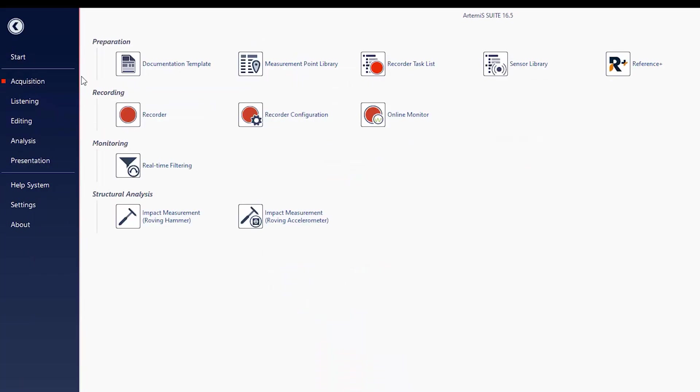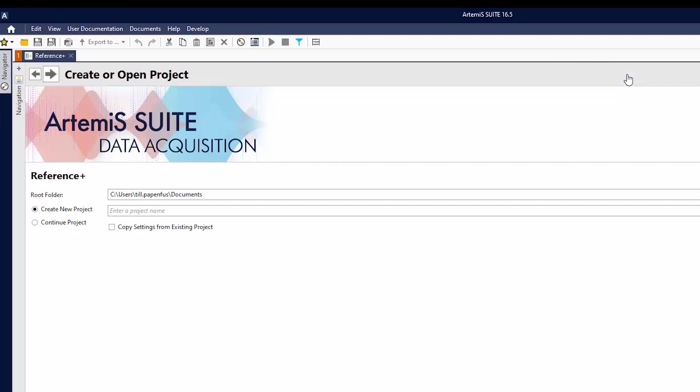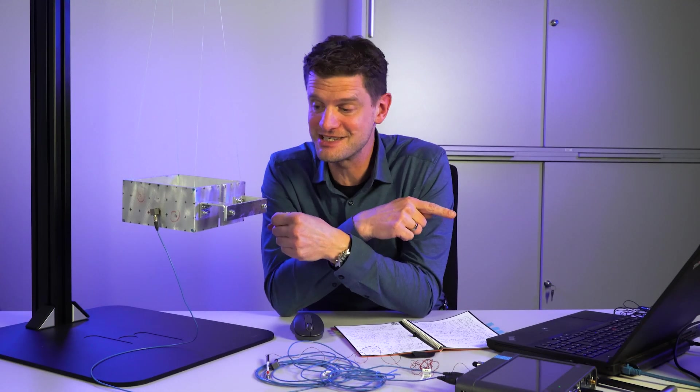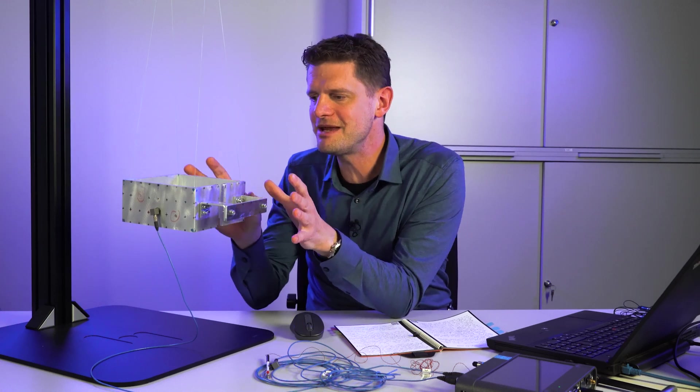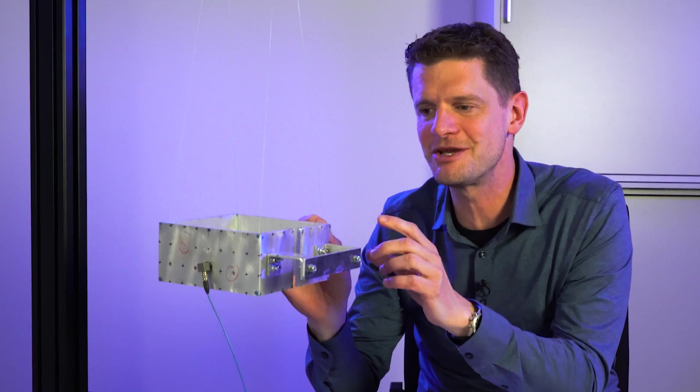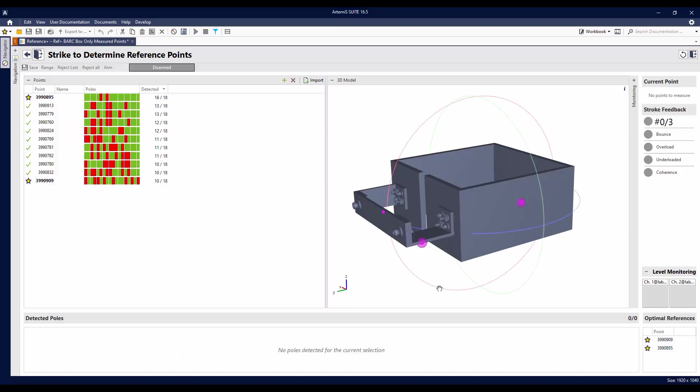Here in Artemis Suite, if I go on acquisition, of course I can do an impact measurement. But before in the preparation, there's this cool tool called Reference Plus. This tool guides you to do so-called driving point measurements. The cool thing is the artificial intelligence gives you a direct feedback how many modes are in your structure and which reference points are suitable to catch which of these modes.